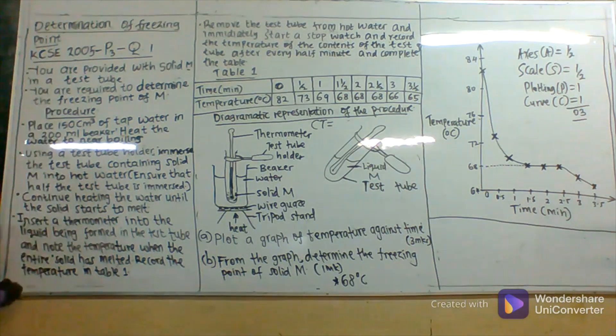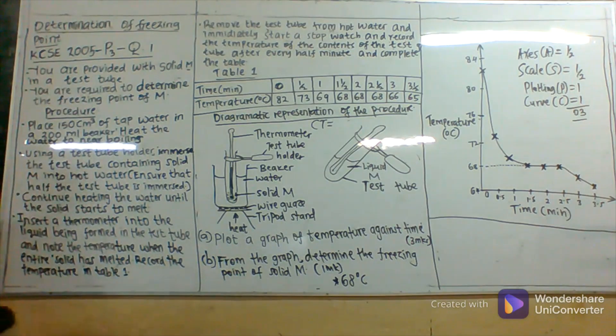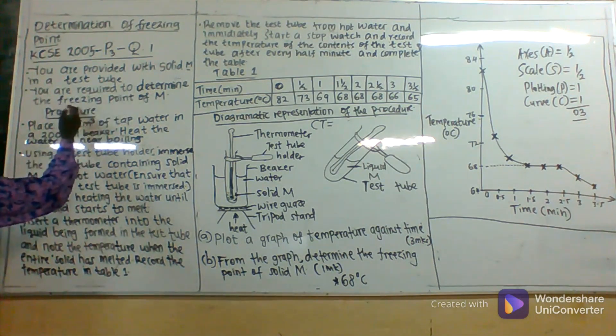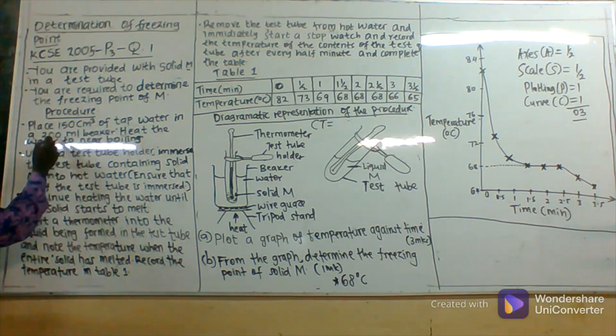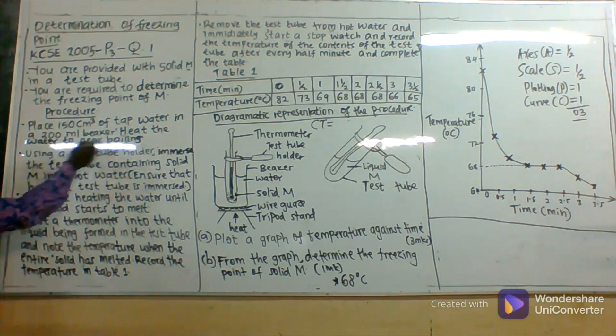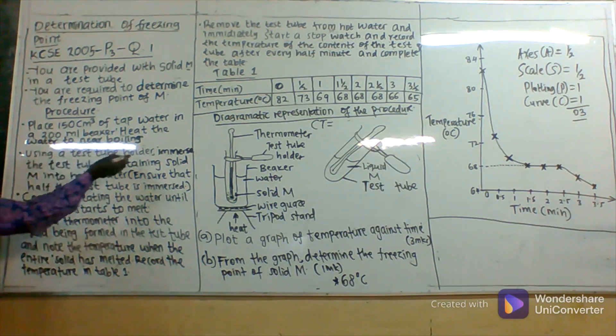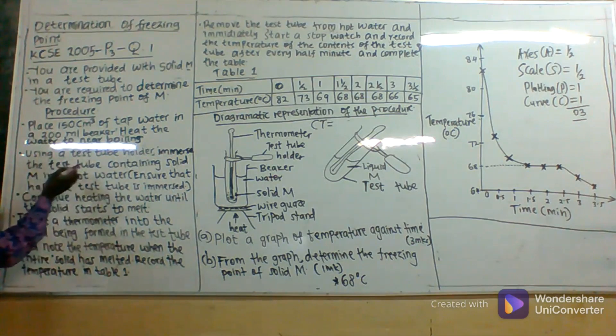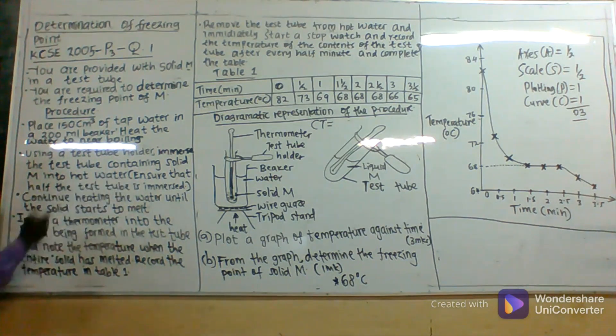During that year, the students were provided with solid M in a test tube. They were told that you are required to determine the freezing point of M. The procedure given was: place 100 cubic centimeters of tap water in a beaker, then heat the water to near boiling. Next, using a test tube holder, immerse the test tube containing solid M into hot water. Ensure that half the test tube is immersed.